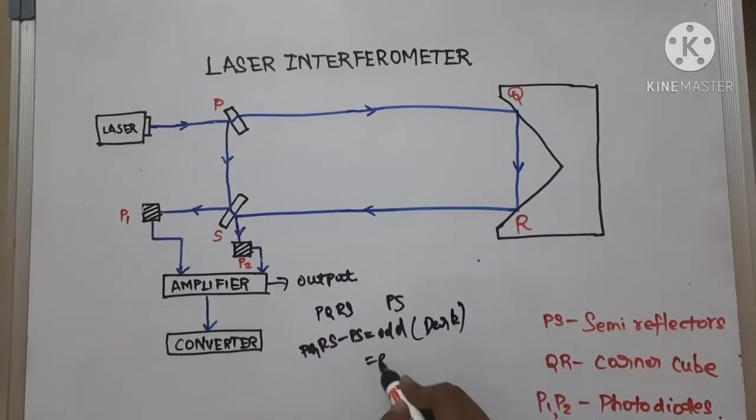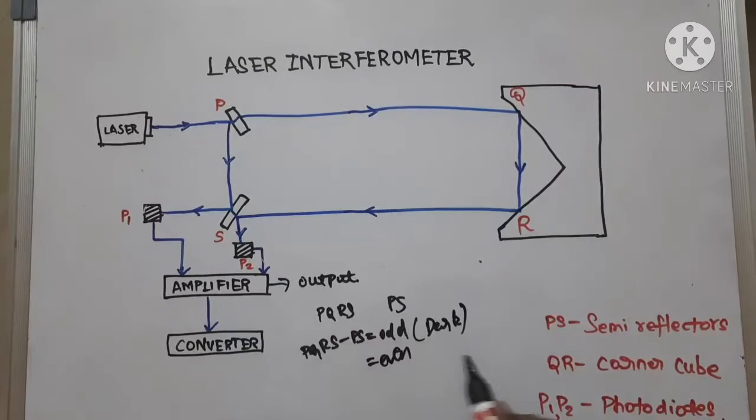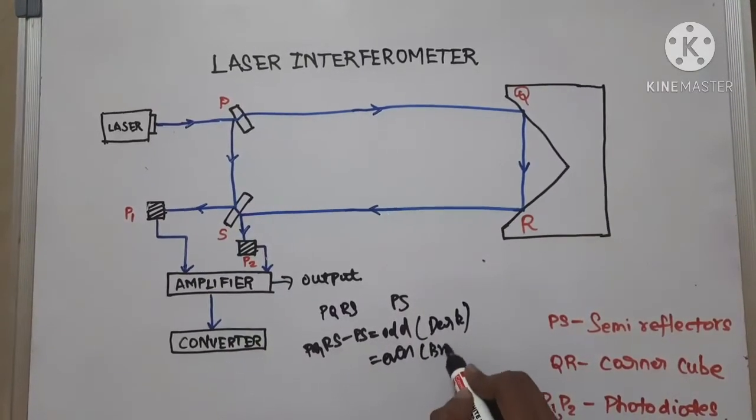Again if this is an even, the difference between these both is an even, then we get bright fringes.